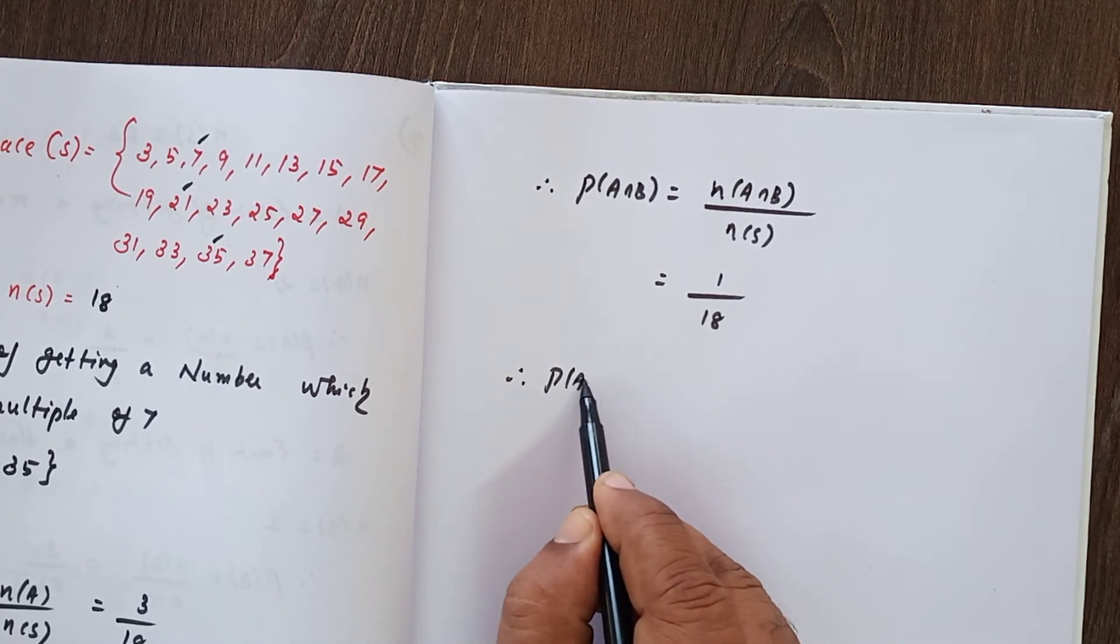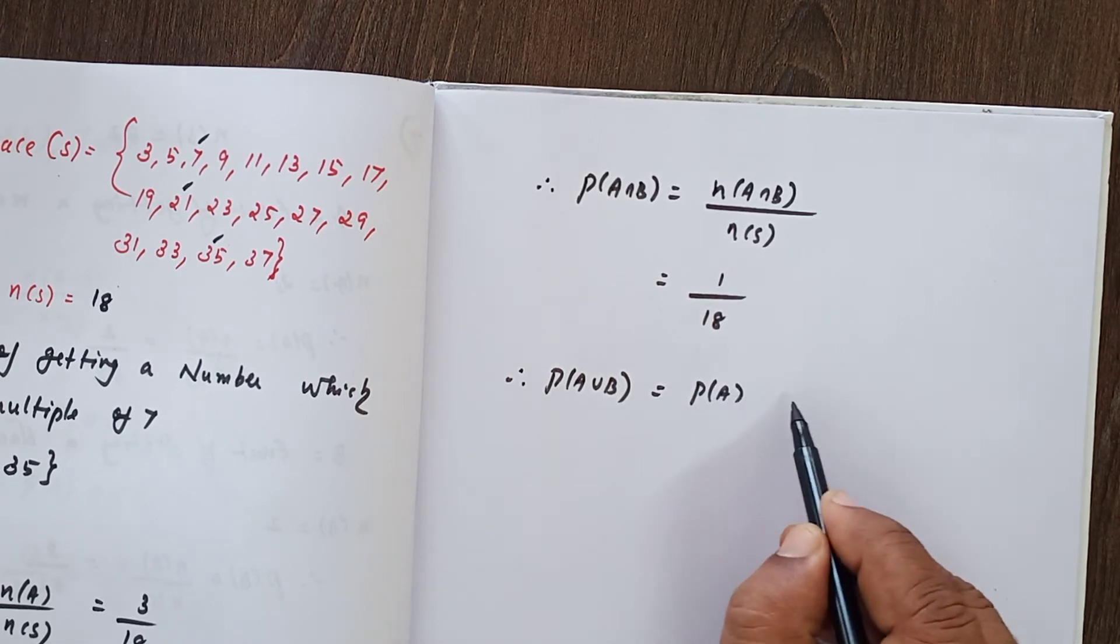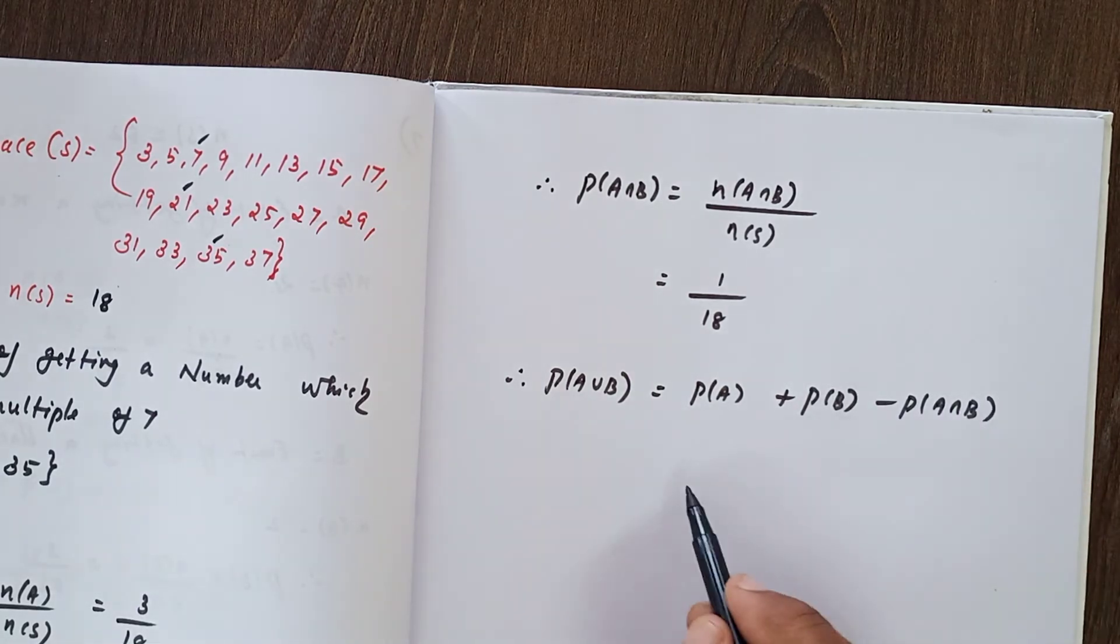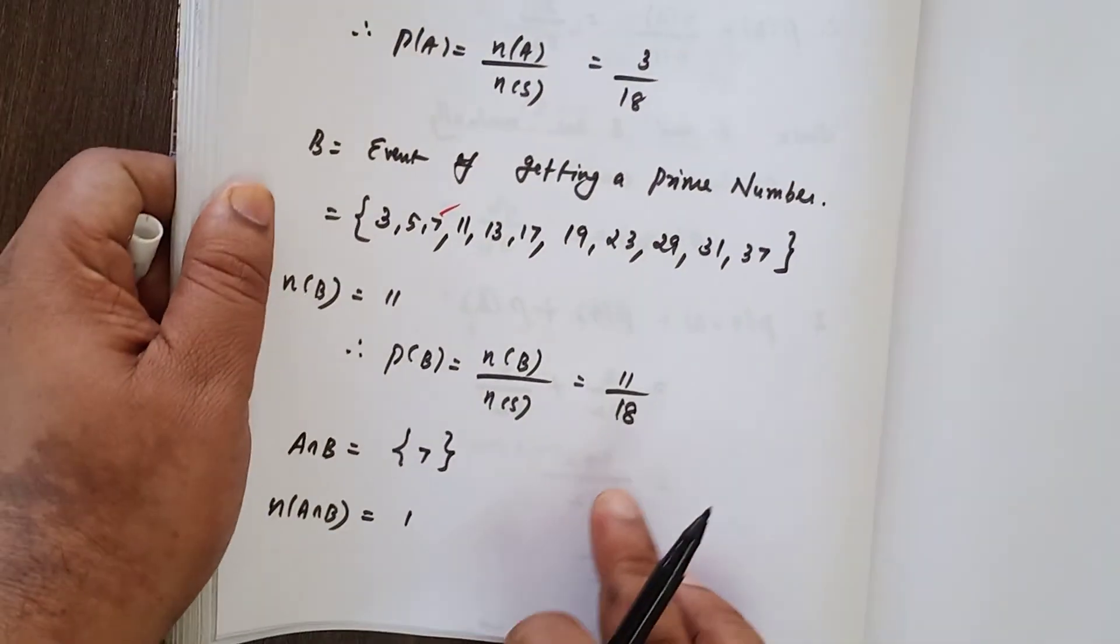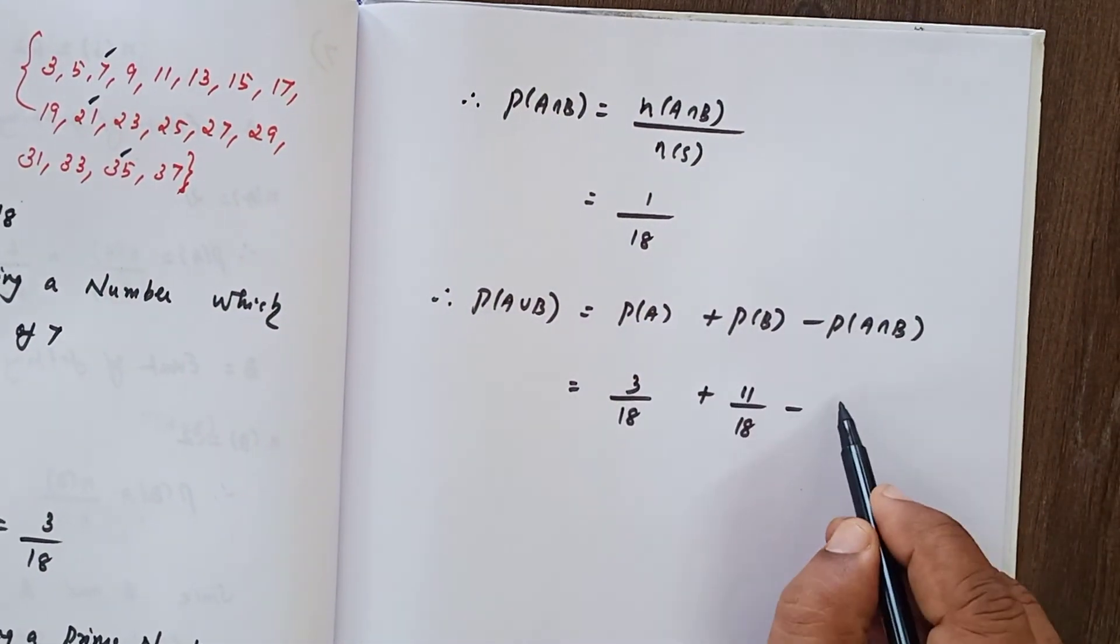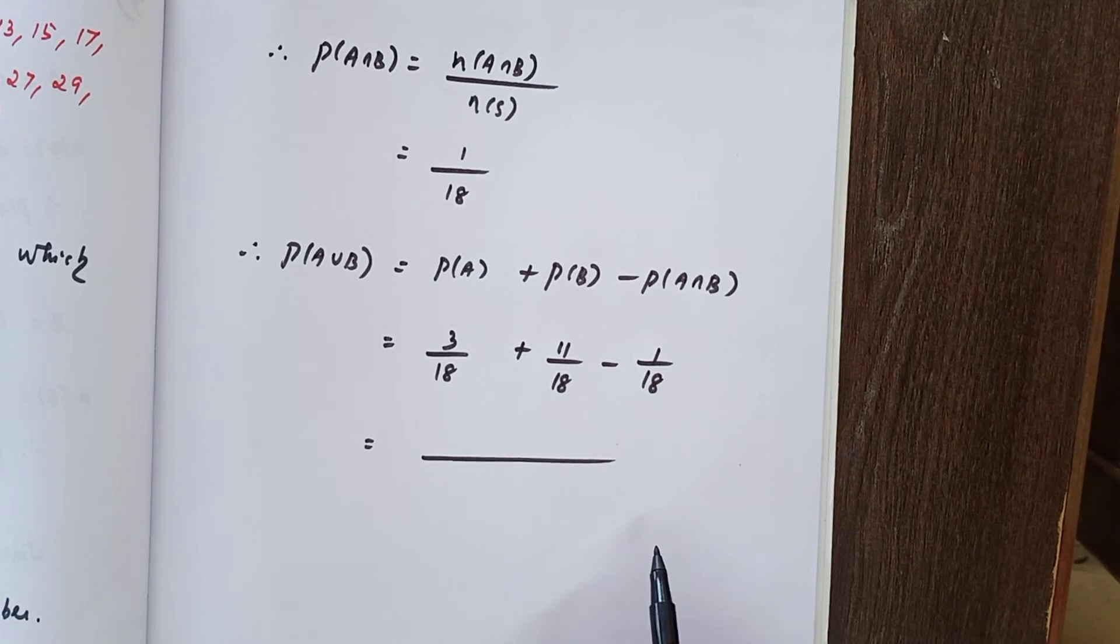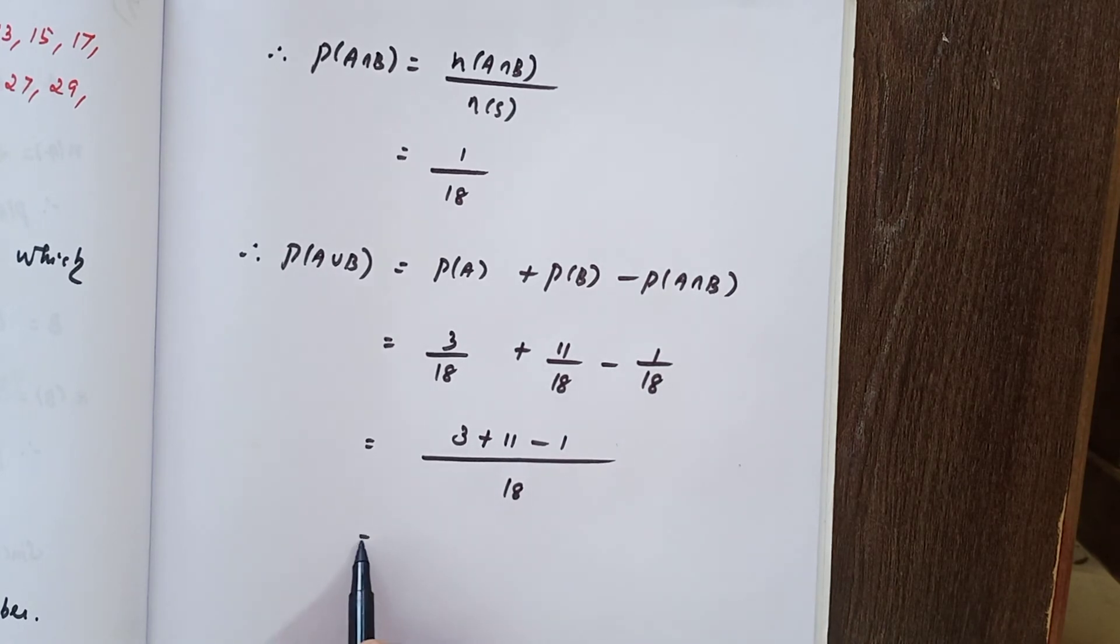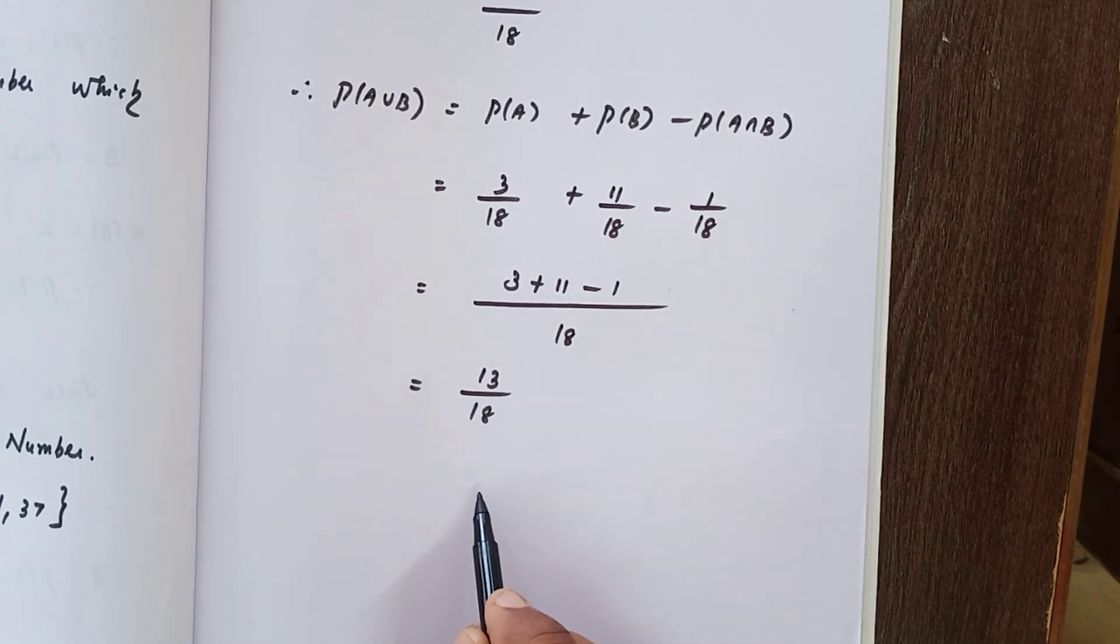Finally, write the formula for P(A union B). A or B means A union B. Formula: P(A) plus P(B) minus P(A intersection B). P(A) value here it is 3 by 18, P(B) is equal to 11 by 18, P(A intersection B) is equal to 1 by 18. So we have the common denominator 18. Write the numerator: 3 plus 11 minus 1. 3 plus 11 is equal to 14, 14 minus 1 is equal to 13 divided by 18. That is the answer.